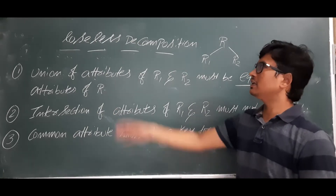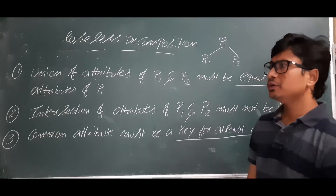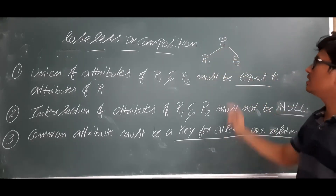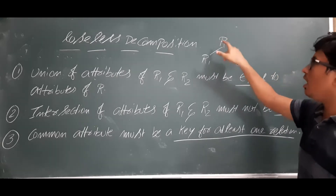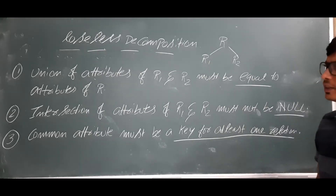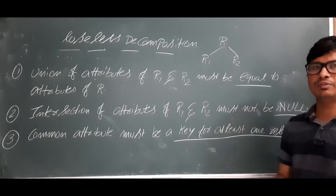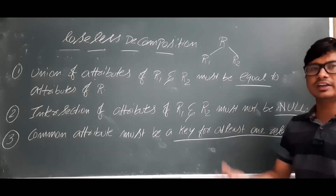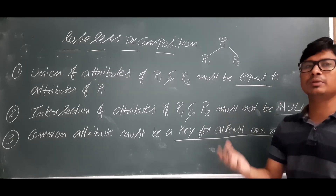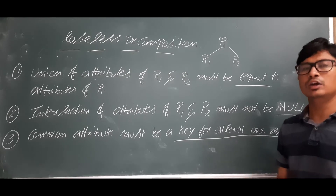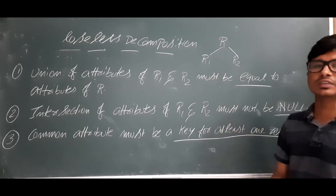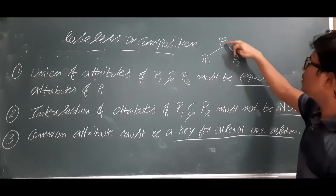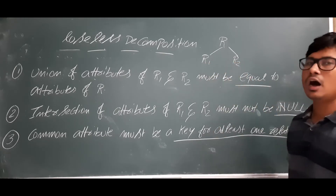Good morning students. In this video we will discuss what is lossless decomposition. Decomposition means a table is there and we are decomposing it into smaller tables. In this example I have a relation R which is decomposed into two relations R1 and R2. Why are we decomposing? If we have a single relation there may be redundancy, and if there is redundancy we will have insertion anomaly, deletion anomaly and updation anomaly. To overcome that and to minimize redundancy, we go for normalization — dividing the large table into smaller tables.